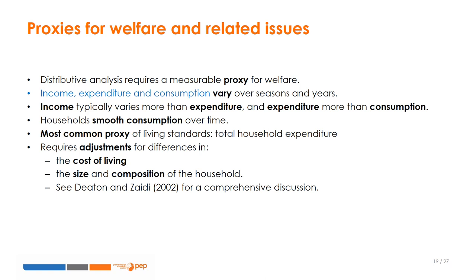Consumption is normally the least variable measure of living standards, as households try to smooth their consumption over time through saving and borrowing. The choice of the appropriate proxy is often determined by what is available in the data, which is usually total household expenditure rather than consumption, as data on variations in household inventories are rare. A comprehensive discussion of the definitions, advantages and disadvantages of possible proxies is provided by Deaton and Zaidi.